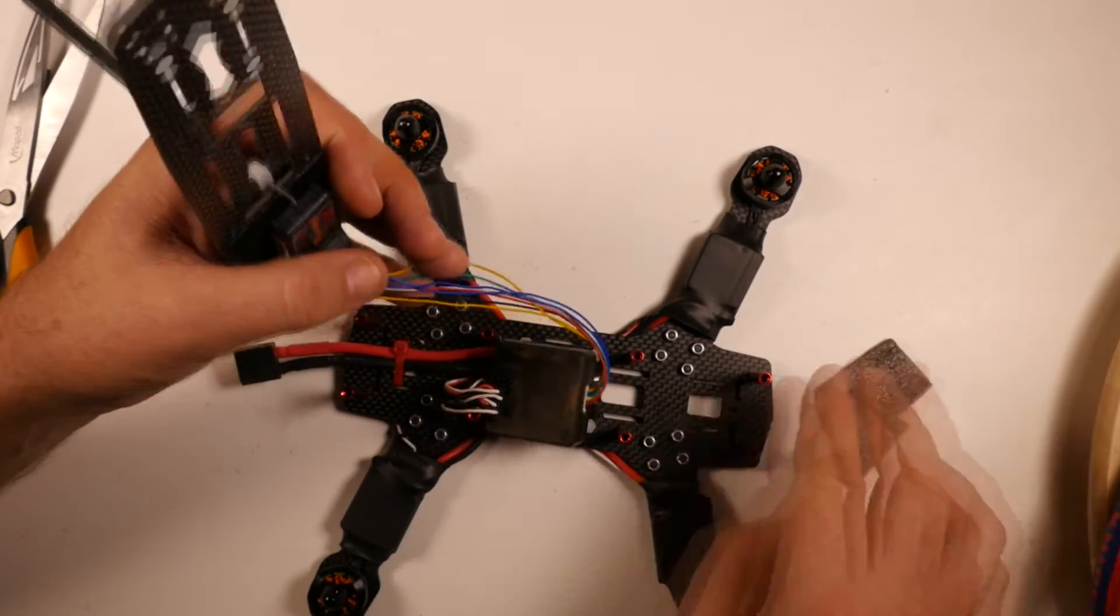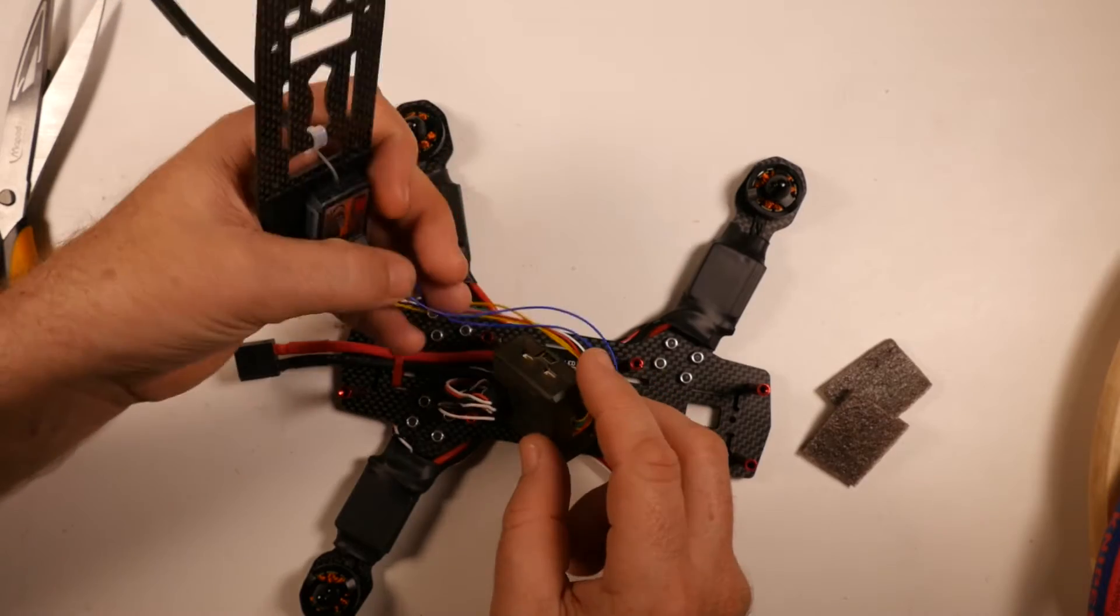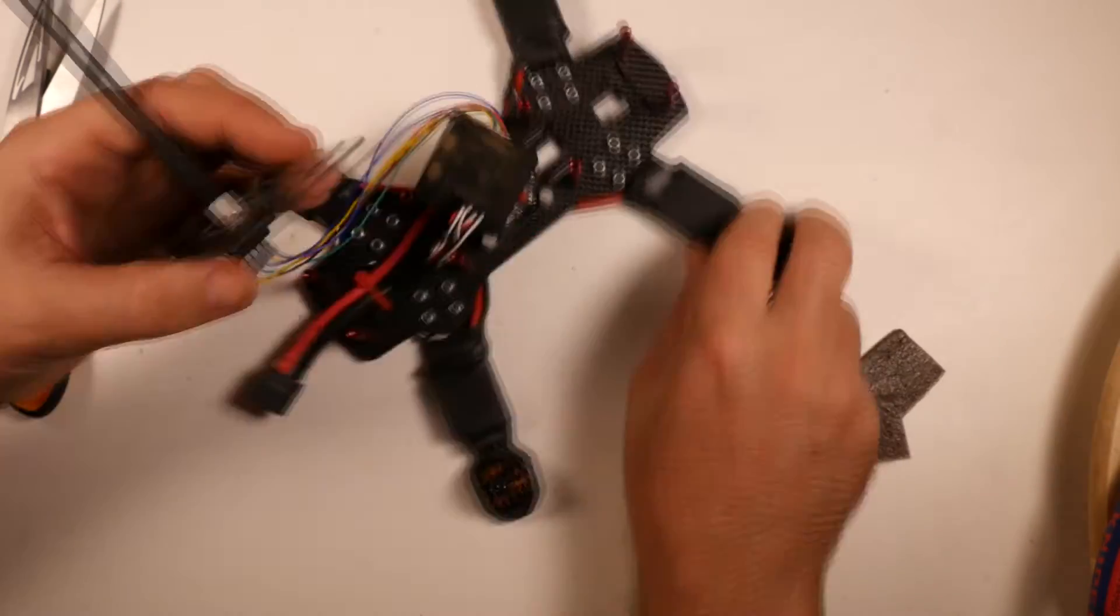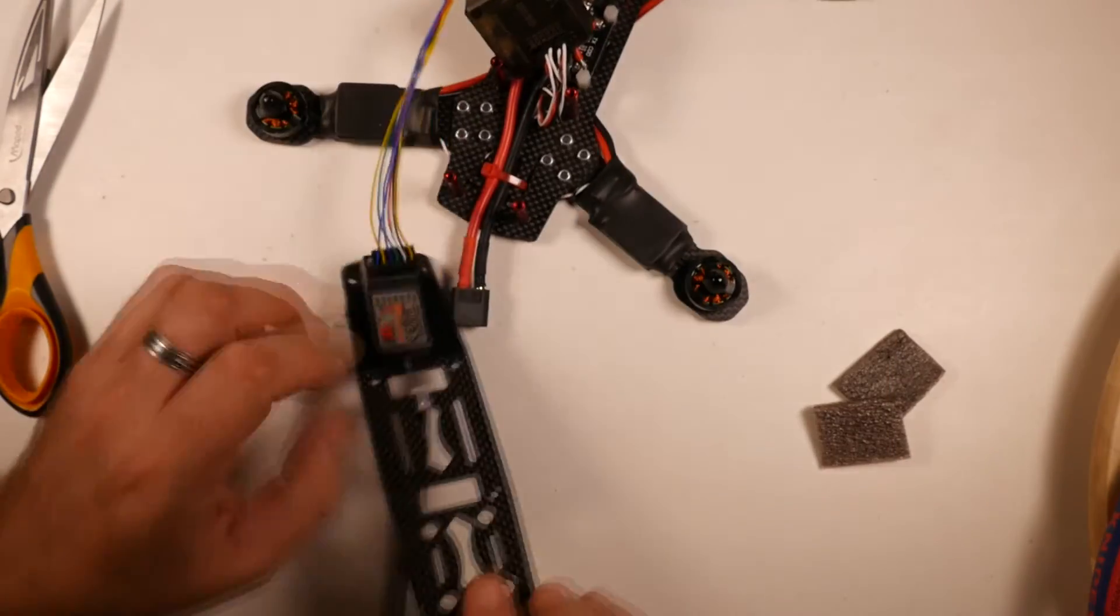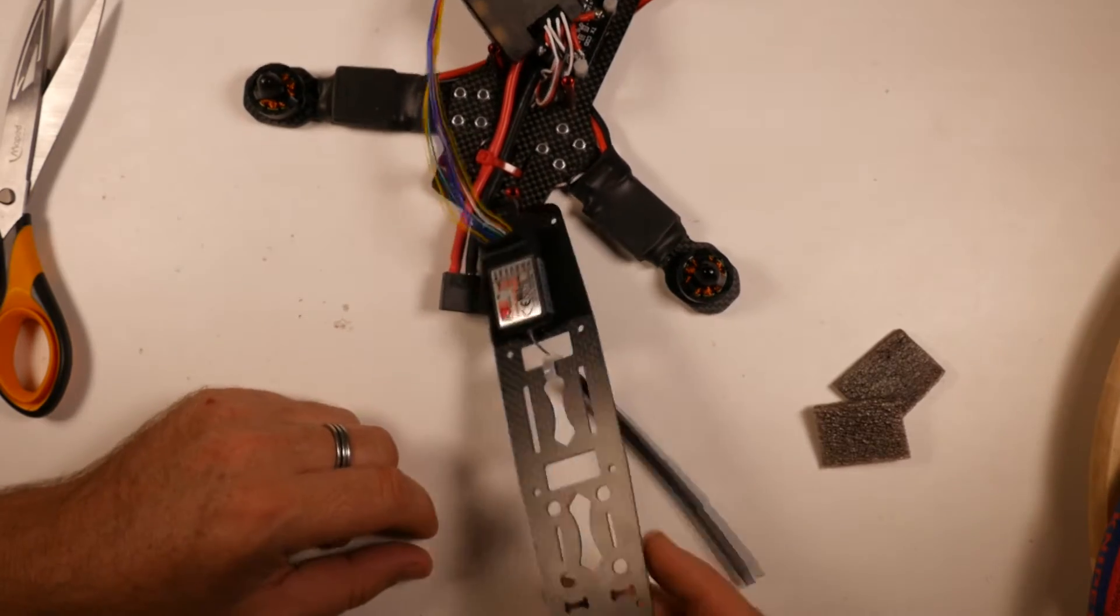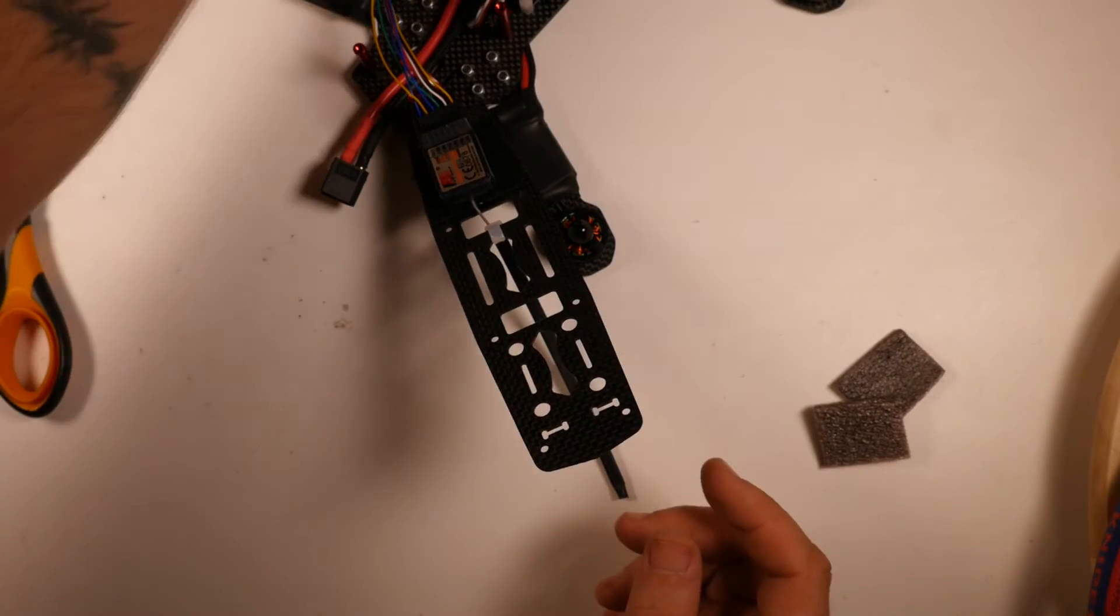Now I'm going to run these ugly cables underneath the flight controller. There is one thing that we definitely want to do because it's much easier to do before we get the frame on.